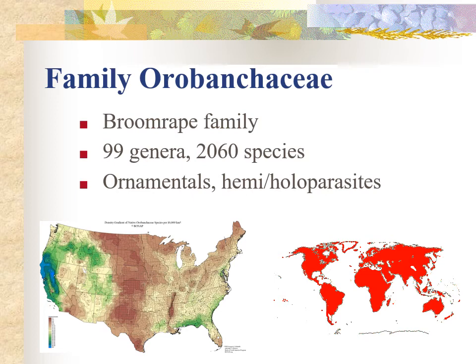The Orobankaceae is a family in the order Lamiales, commonly known as the broom rape family. It consists of about 100 genera with over 2,000 species and has a nearly global distribution, as you can see here.